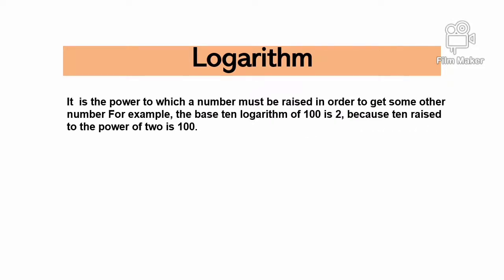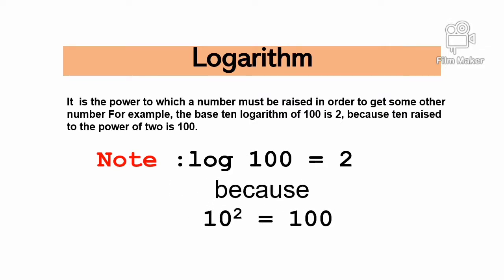Logarithms: It is the power to which a number must be raised in order to get some other number. For example, the base 10 logarithm of 100 is 2 because 10 raised to the power of 2 is 100. Logarithm of 100 equals 2 because 10 to the second power equals 100.